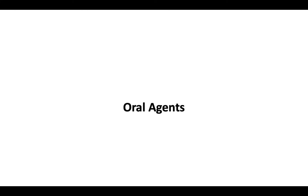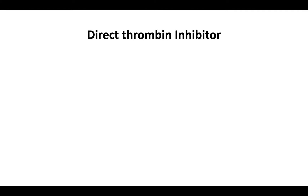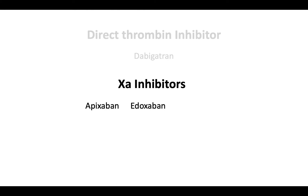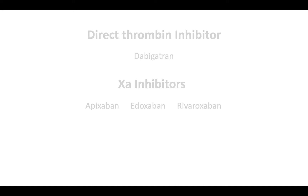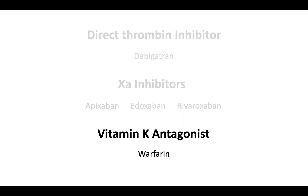Stable patients, or patients transitioning out of the hospital, will be treated with oral agents. This category includes the direct thrombin inhibitor dabigatran, the factor Xa inhibitors apixaban, edoxaban, and rivaroxaban, and the vitamin K antagonist warfarin. Warfarin can precipitate skin necrosis and venous limb gangrene. Therefore, it should not be used as initial therapy or before platelet recovery. At initial diagnosis, therapeutic warfarin should be reversed with vitamin K.